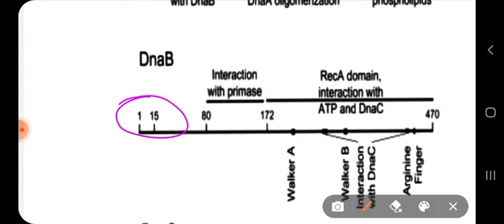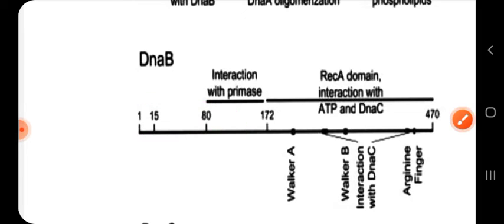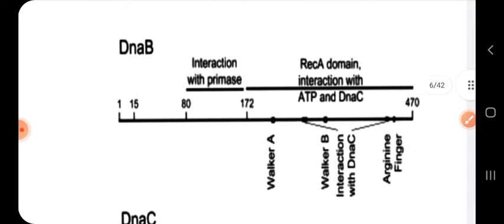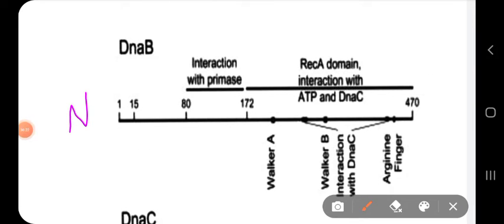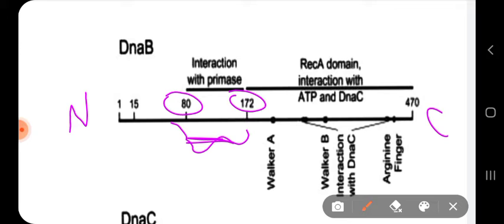The numbers given in the DnaB domain diagram represent the length in amino acids. The N-terminal end is the amino terminal end, and the C-terminal end is the carboxy terminal end. Within the region of amino acids 80 to 172 is the place where DnaB interacts with the primase enzyme — DnaG.